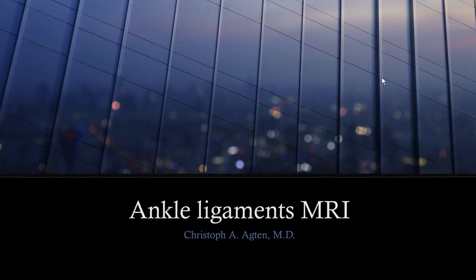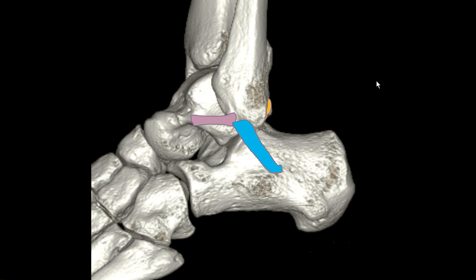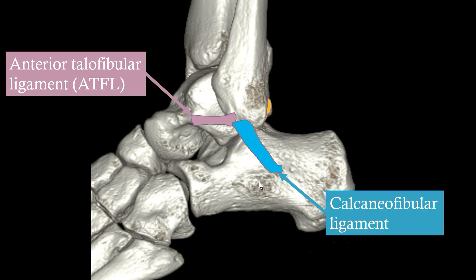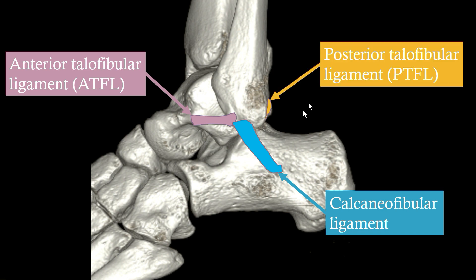The situation on the lateral side is much easier and simpler than on the medial side, as you can see on this diagram. We have the anterior talofibular ligament running from the talus to the tip of the fibula, then the calcaneofibular ligament running in a slightly oblique orientation to the posterior part of the calcaneus, and then the very strong posterior talofibular ligament at the back.